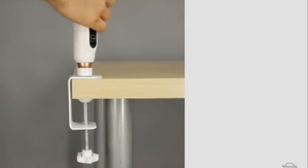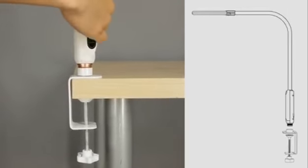For clamp-on light, thread the lamp head clockwise into the provided socket housing on the clamp-on.